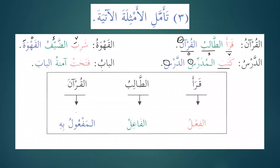Fatahat aminatun al-baba — Aminah opened the door. If the verbal sentence has a feminine doer, it starts with the fourth form of the verb: fatahat, dhahabat, nasarat, qara'at. When the doer is masculine, we use the first form: qara'a, shariba, kataba.